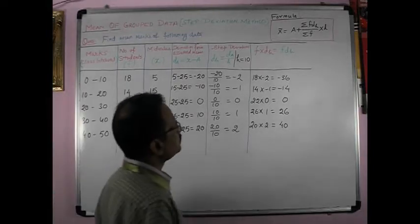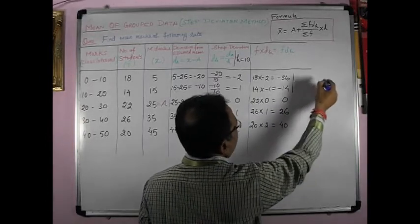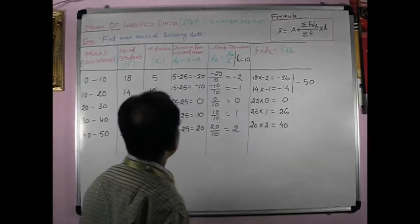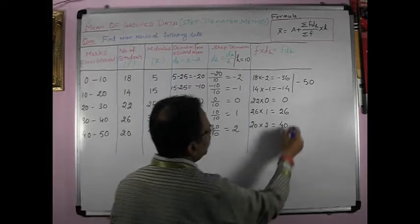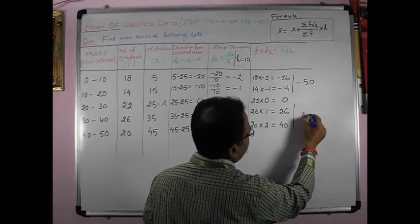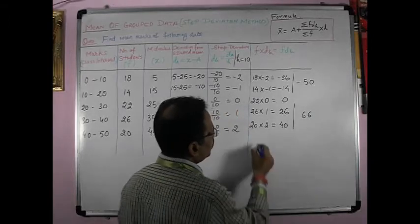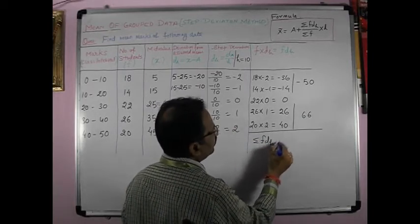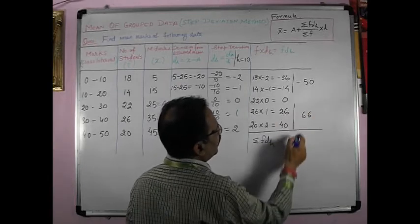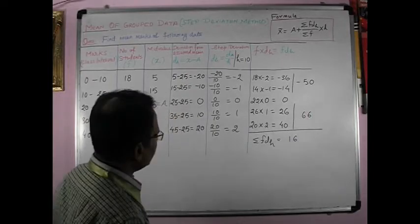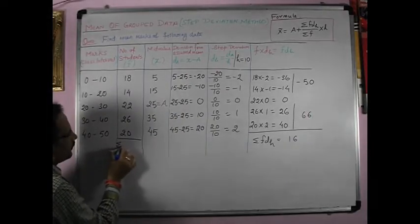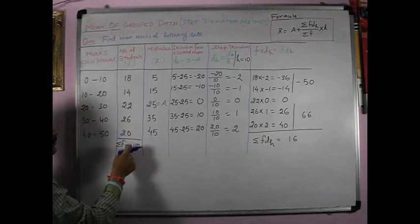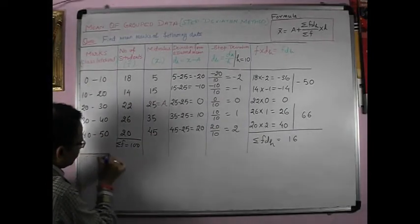Now we get here minus 50, here we get 66. So summation of fdh is equal to 16. Now summation of f is equal to 100. 18 plus 14 is 32, plus 22 is 54, plus 26 is 80, plus 20 is 100.